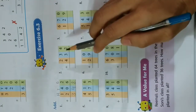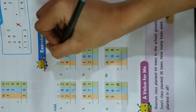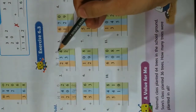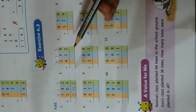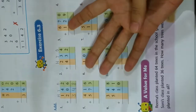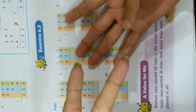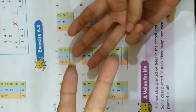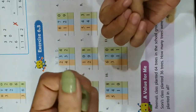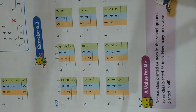Now have a look at the second one. Again write H, T, O on top. We will begin by adding the numbers at ones place. 4 is given on top, so take out 4 fingers. 2 is given below, so take out 2 fingers. Count: 1, 2, 3, 4, 5, 6. You get 6, so write 6 over here.